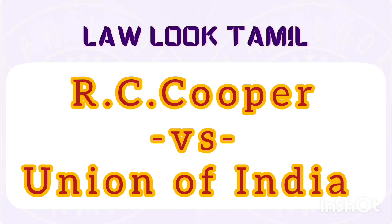The articles alleged to be violated included: Article 19(1)(f) — right to acquire, hold, and dispose of property; Article 19(1)(g) — right to practice any profession or trade; Article 31 — right to property; and Article 14 — equality before law and equal protection of law. The argument was that nationalization violated Article 14 as not all banks were treated equally.